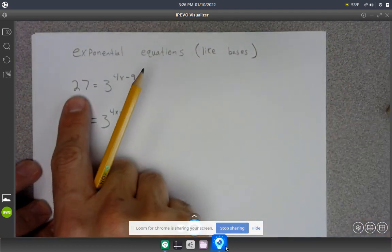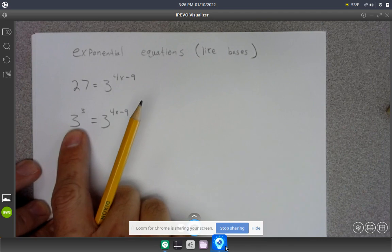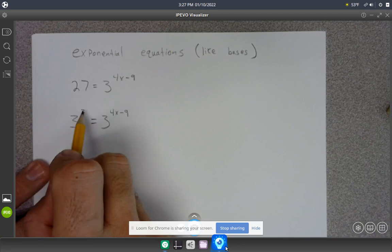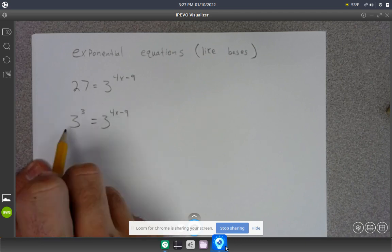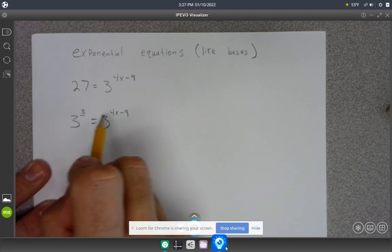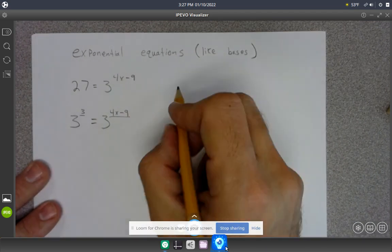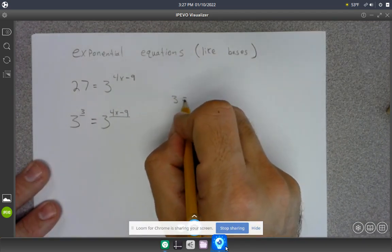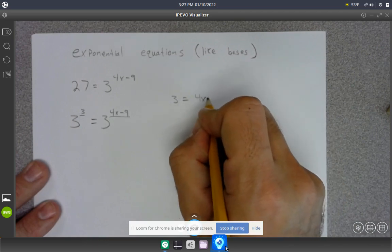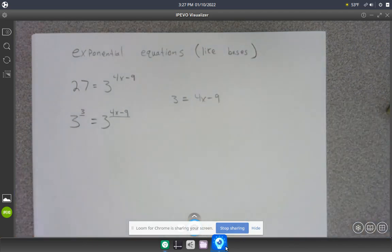So I can take the number 27 and rewrite it as 3 to the 3rd power. Now that I've done that, the idea is that if these two things are equal to each other, then these exponents must be equal to each other. So I'm going to say 3 is equal to 4x minus 9, and then I can solve that equation.